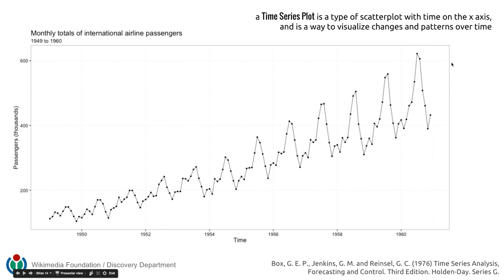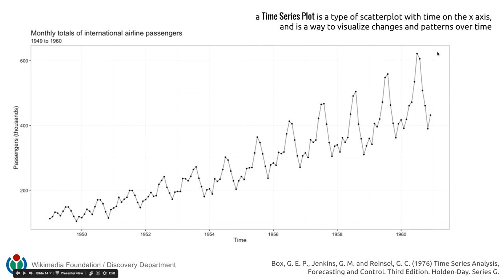A time series plot is a type of scatter plot where the x-axis is time. Because observations are linked together over time, the author also adds a line between each point, which shows possible patterns and changes over time. This is the type of plot most commonly used on dashboards — most dashboard visualizations are time series plots because we're interested in seeing how metrics change over time.